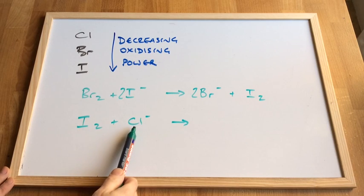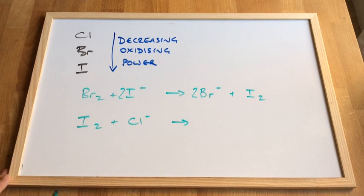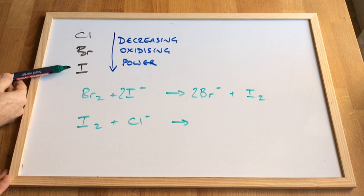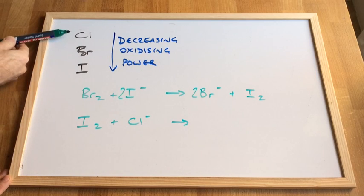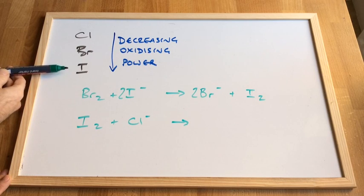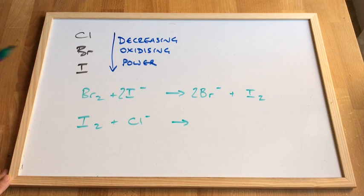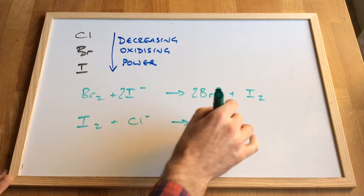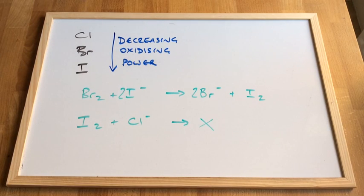Can iodine oxidize the chlorine in chloride? So can iodine steal the electron from the chlorine? Of course it can't because it's got a greater atomic radius, it's got more shielding and therefore a weaker attraction for the electrons. So that reaction can't happen. Iodine is not a powerful enough oxidizing agent.